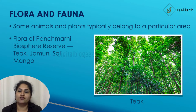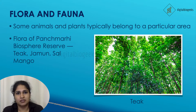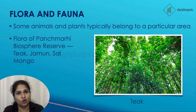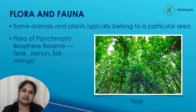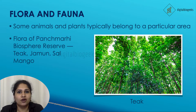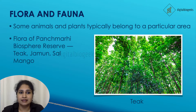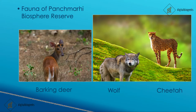Moving on to flora and fauna. Some plants and animals are seen only in a particular area — these are the flora and fauna of that area. The flora of the Panchmarhi Biosphere Reserve includes Teak, Jamun, and Sal. The fauna includes Barking deer, Wolf, and Cheetah.